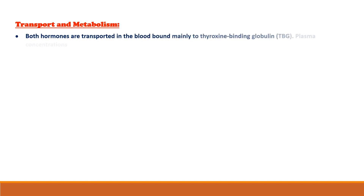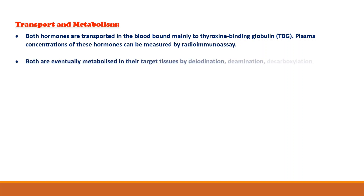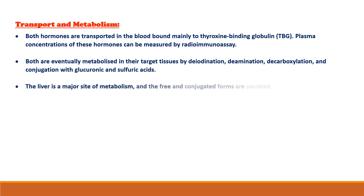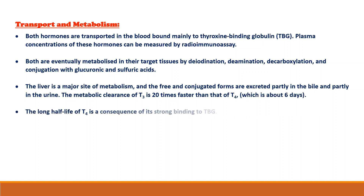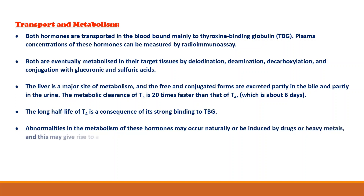Regarding transport and metabolism of thyroid hormones: both hormones are transported in blood bound mainly to thyroxine-binding globulin. Both are eventually metabolized in their target tissues by deiodination, deamination, decarboxylation, and conjugation with glucuronic and sulfuric acid. The liver is a major site of metabolism, and the free and conjugated forms are excreted partly in the bile and partly in the urine. The metabolic clearance of T3 is 20 times faster than that of T4, which has a half-life of about 6 days. The longer half-life of T4 is a consequence of its strong binding to TBG. Abnormalities in the metabolism of these hormones may occur naturally or be induced by drugs or heavy metals, giving rise to conditions such as low T3 syndrome.